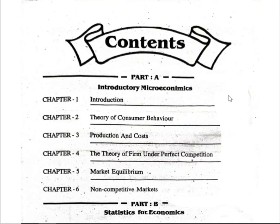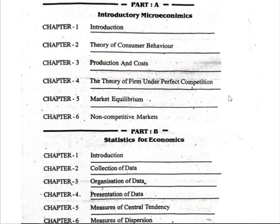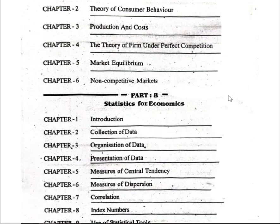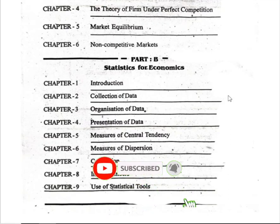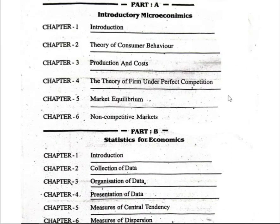Part A covers: Chapter 1 (first chapter), Chapter 2 theory of consumer behavior, Chapter 3 production and cost, Chapter 4 the theory of the firm under perfect competition, Chapter 5 market equilibrium, Chapter 6 non-competitive market. Part B covers statistics for economics: collection of data, presentation of data, measurement of central tendency, measures of dispersion, correlation, index numbers, and use of statistical tools.